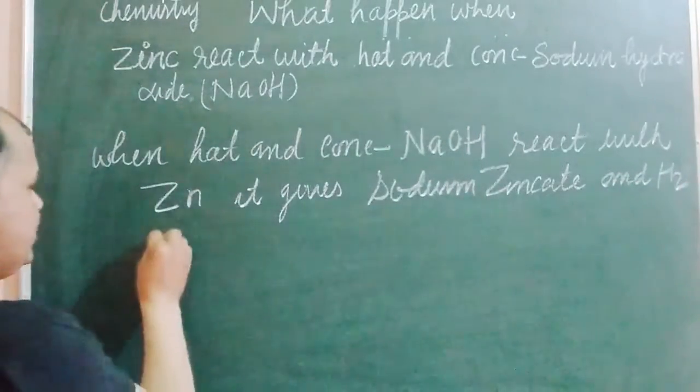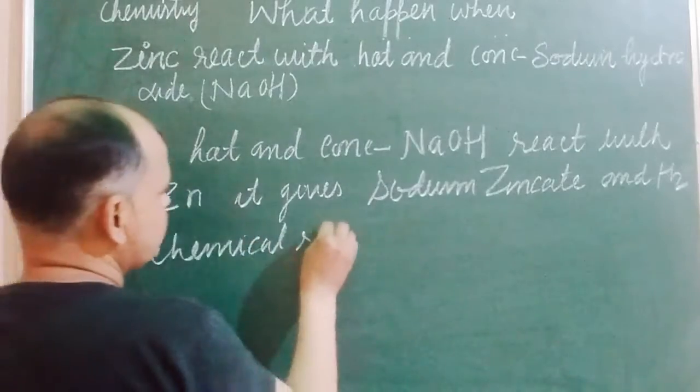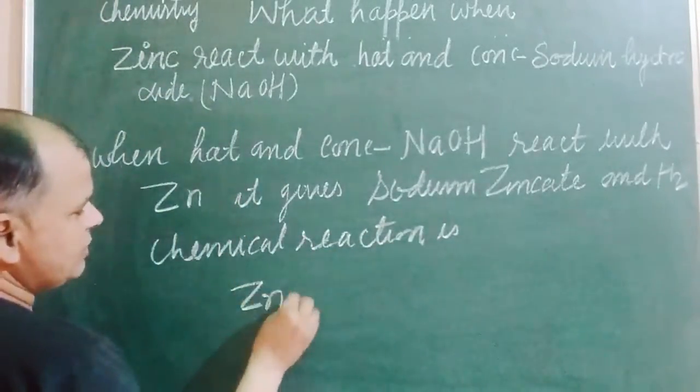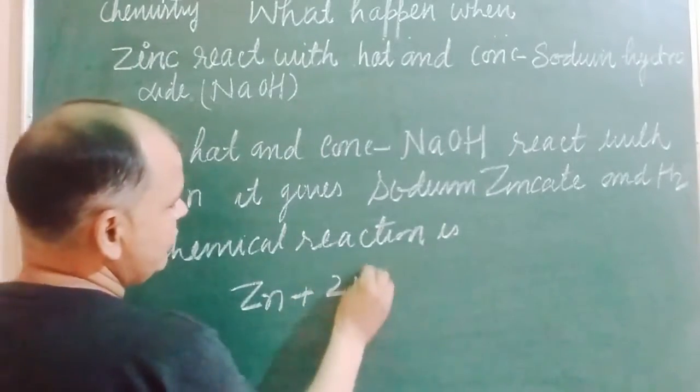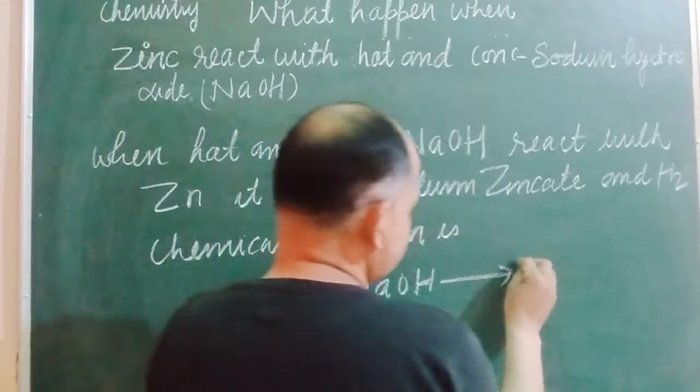So the chemical reaction is: Zn plus 2NaOH gives Na2